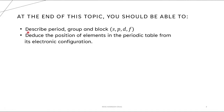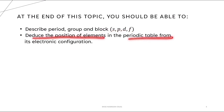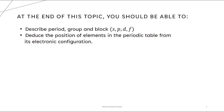In this video, we will learn to describe period, group, and block, and then we will look at a few examples to deduce the position of elements in the periodic table from its electronic configuration. We will use electronic configuration a lot in this video, so make sure you really understand how to write the electronic configuration that you have learned in the previous video.